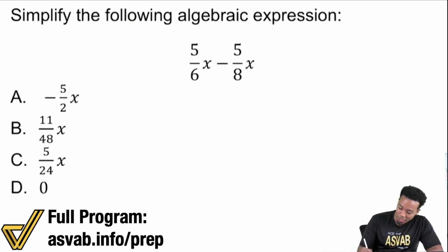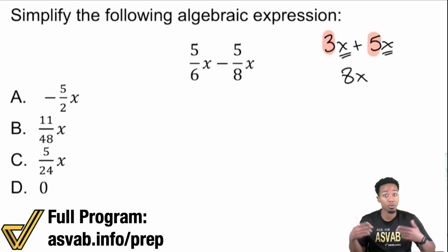So if we had, let's go ahead and say, 3x plus 5x, what would that end up giving us? Well that would end up giving us 8x because we would ignore the x's for a moment and simply add those coefficients or the numbers in front of the letter of the variable. And so that's exactly what you're gonna do here.